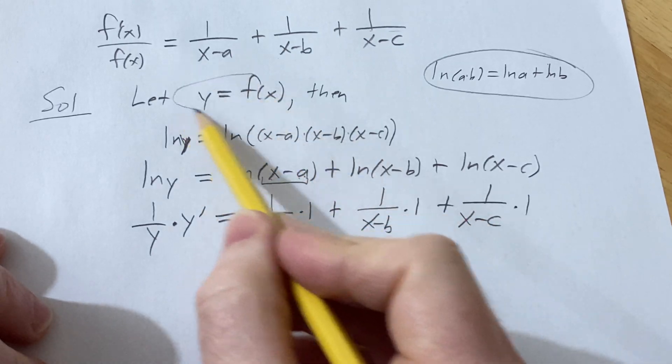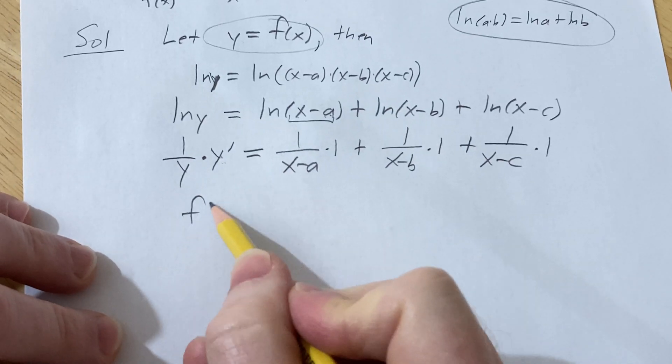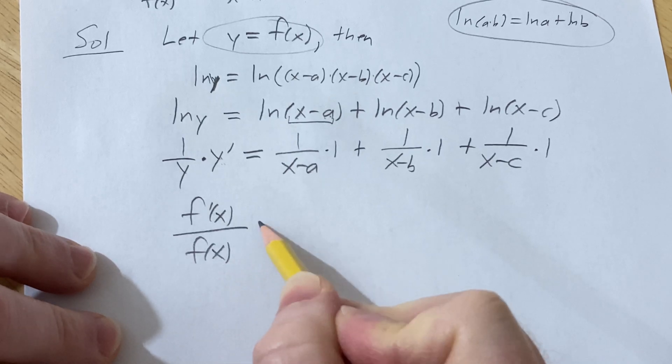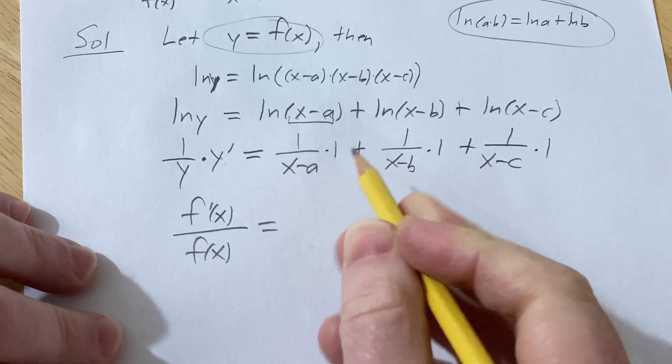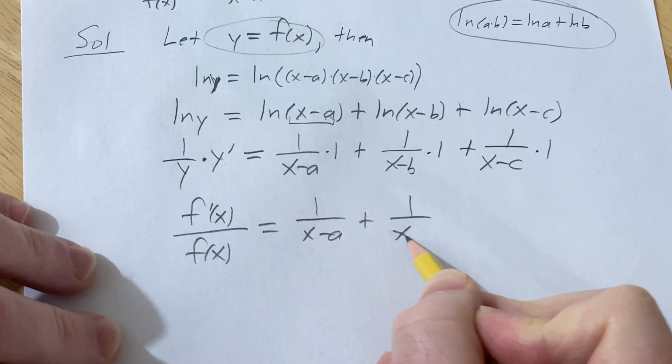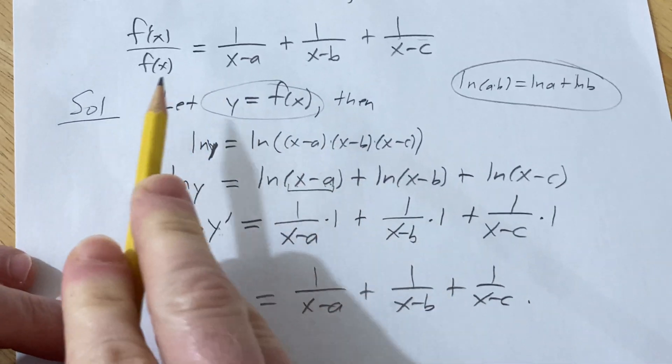Right, because recall that y was equal to f(x), so y' is really f'(x). And then y was f(x). And anything times 1 is anything, so this is just 1/(x-a) + 1/(x-b) + 1/(x-c), which is exactly what we had to show.